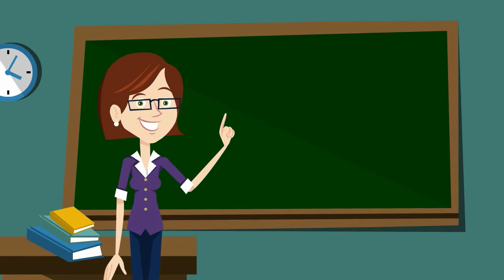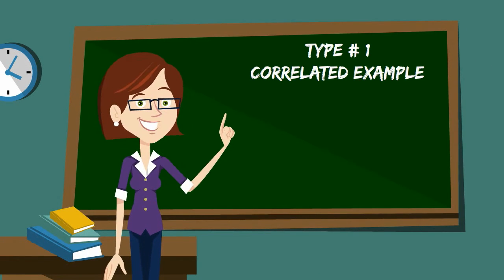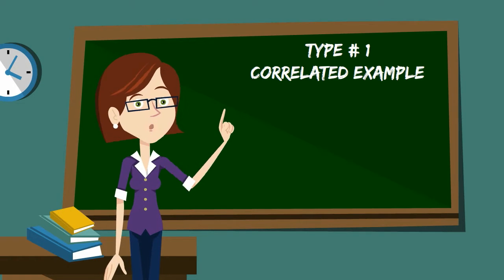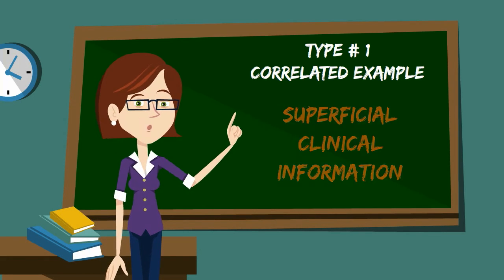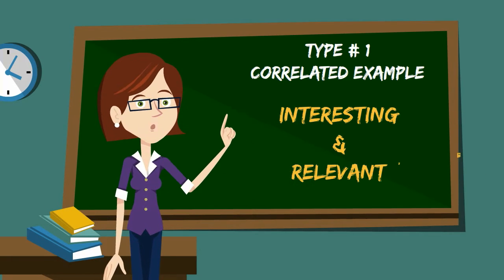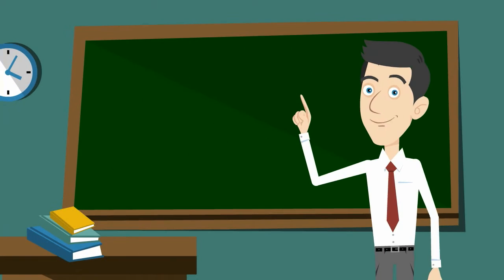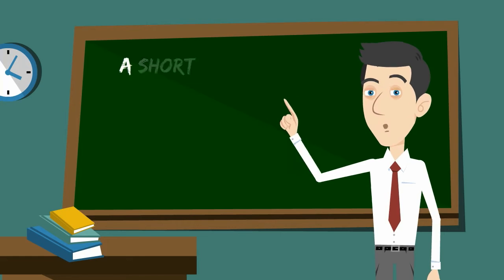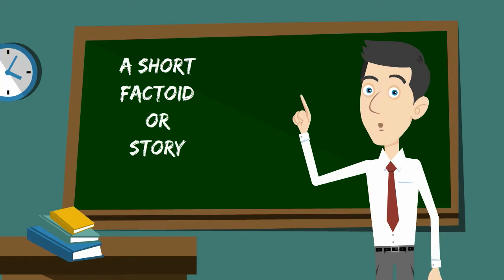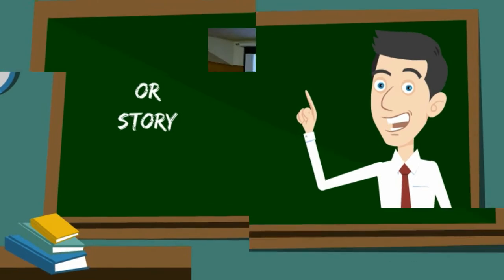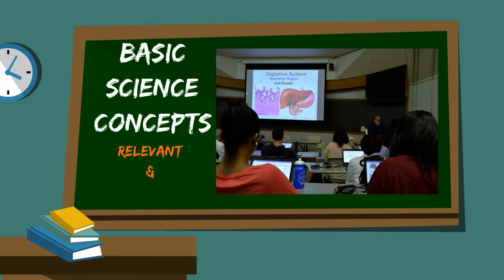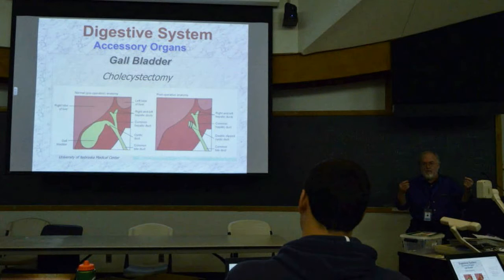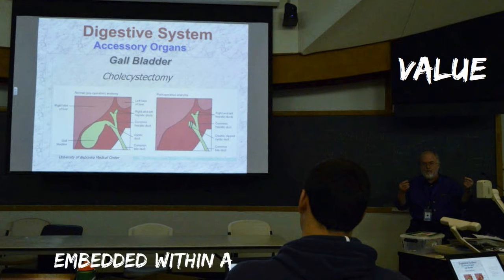The first type of clinical correlation is a correlated example. Correlated examples consist of superficial clinical information or stories accompanying basic science concepts to make the information more interesting and relevant. This type is usually presented as a short factoid or story that relates a basic science concept to a disease. It can be used by the instructor to show that the basic science concepts being taught are relevant and interesting, and that there is value in learning the information. They are oftentimes embedded within a basic science lecture.